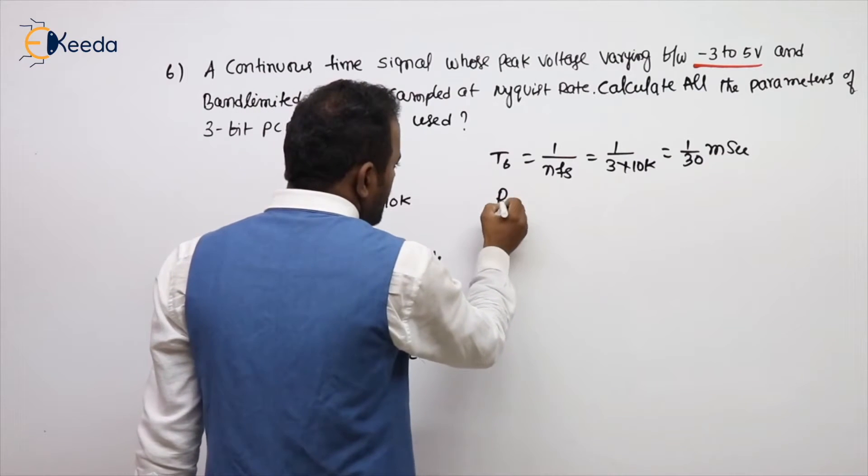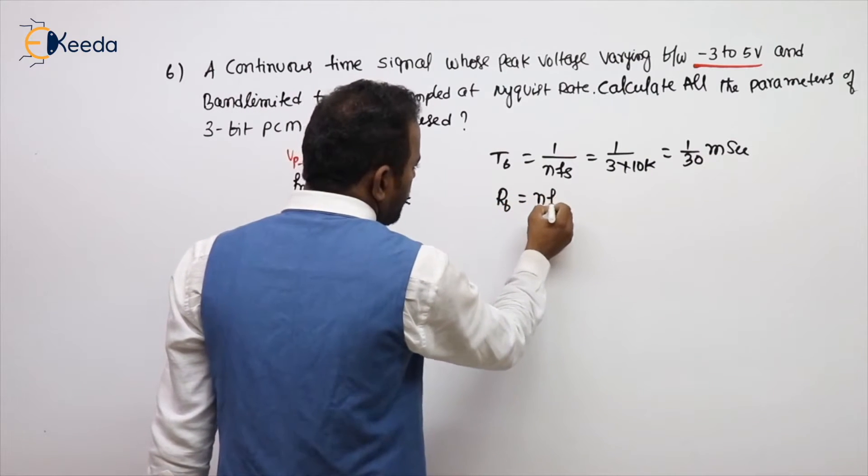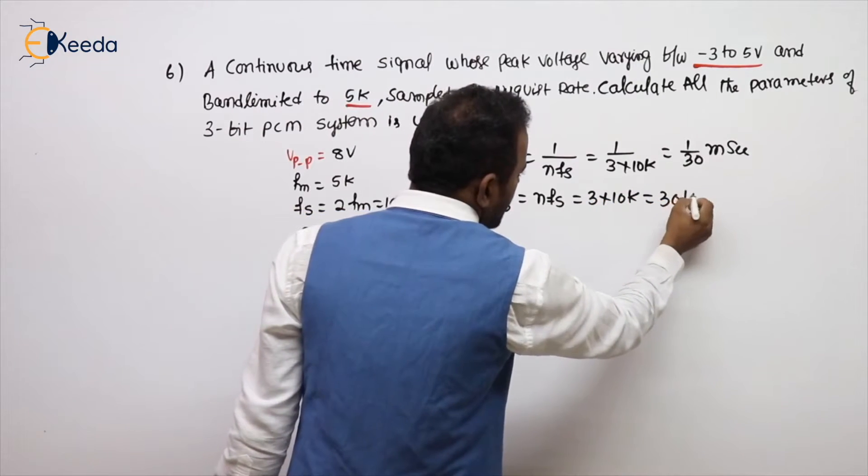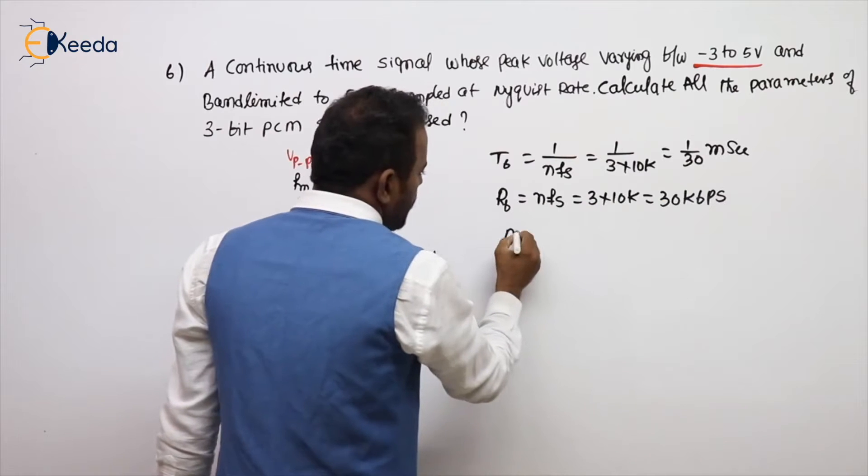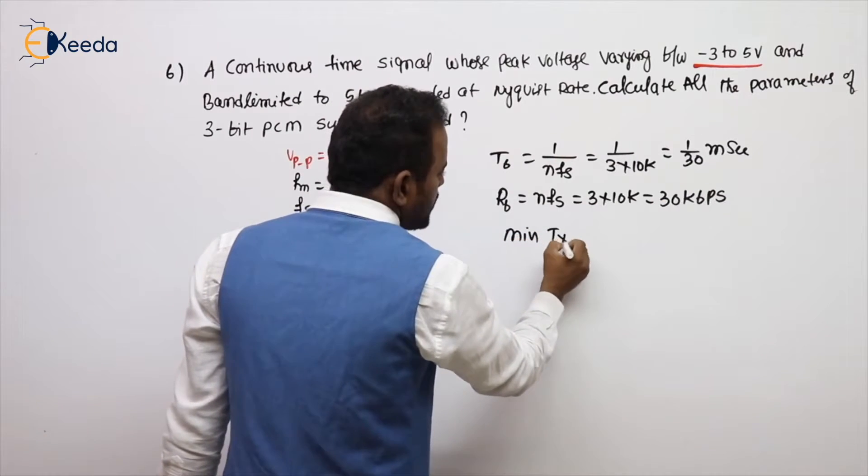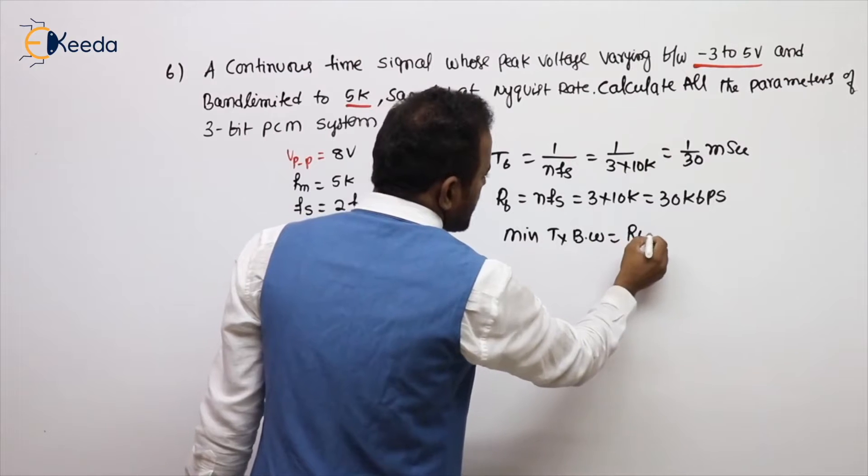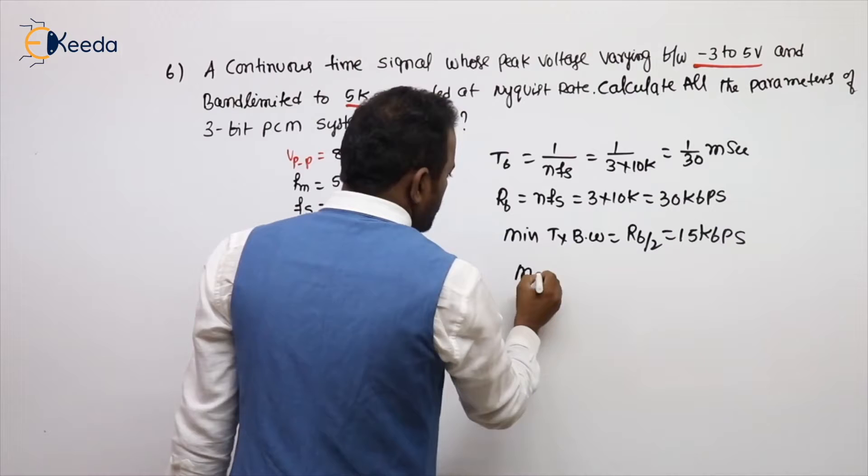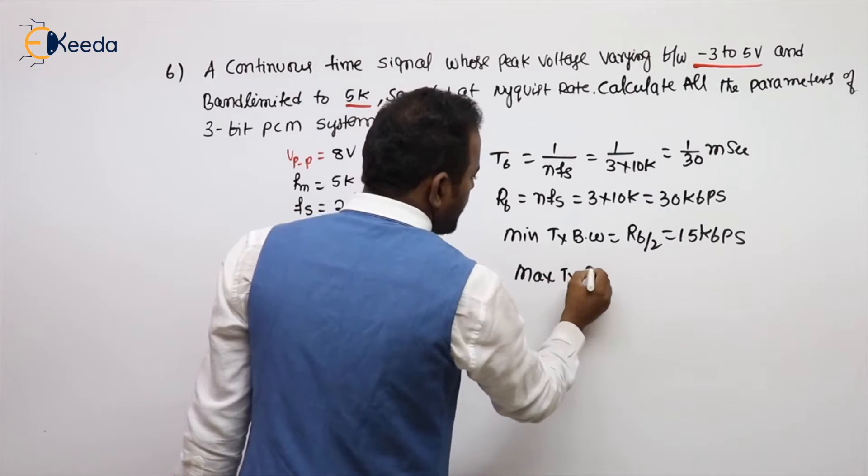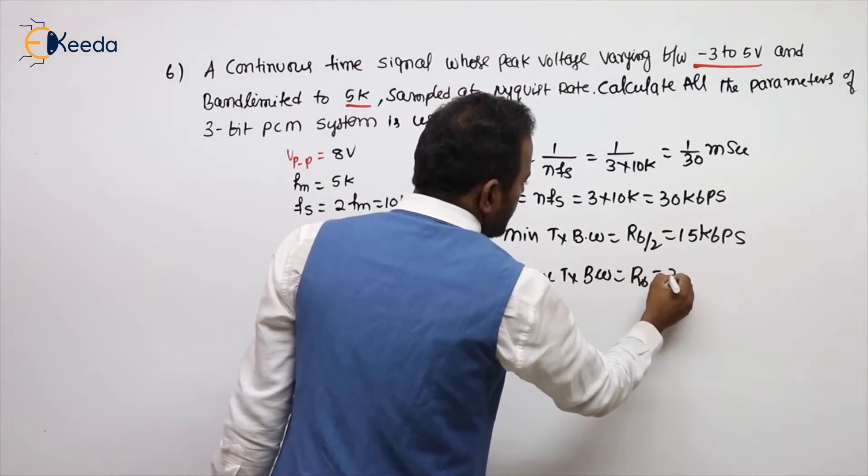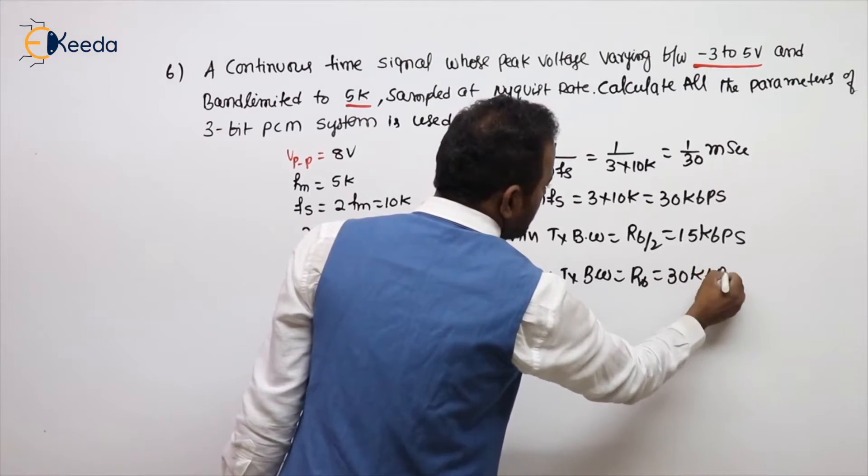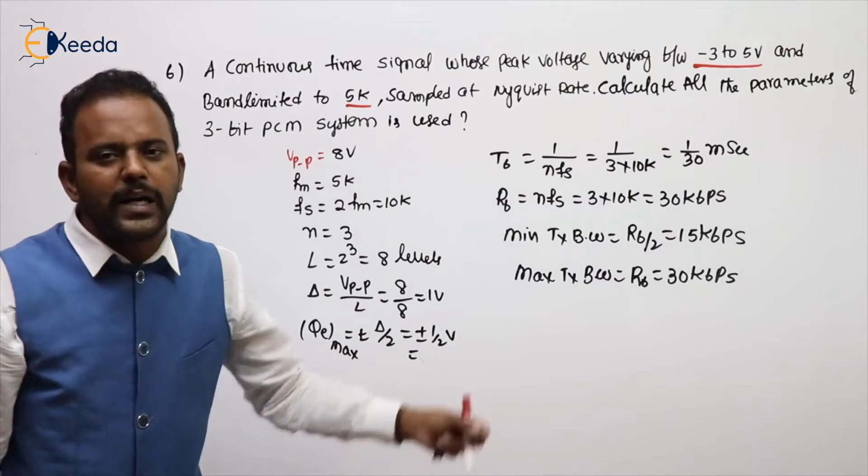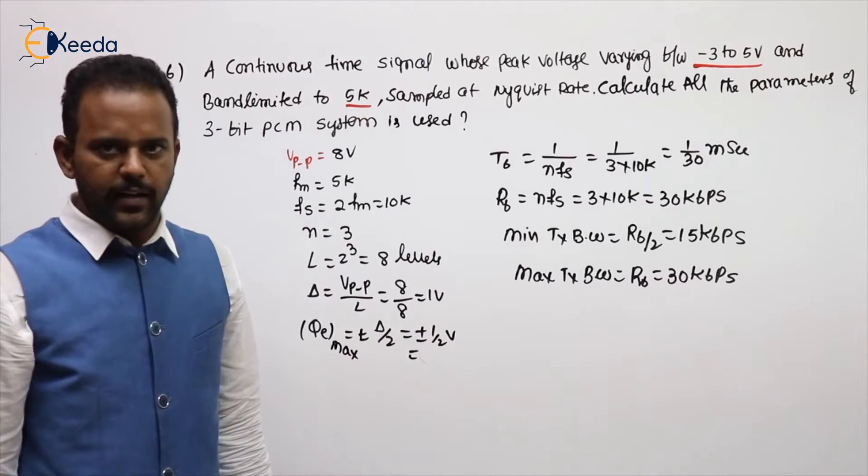What is RB sir? RB equal to NFS. N value is 3, FS is 10K, so 30 Kbps. Then what is minimum transmission bandwidth or transmission bandwidth is nothing but RB by 2, so 15 Kbps. What about the max transmission bandwidth? Maximum you can go up to RB which is nothing but 30 Kbps. A simple problem just to recall all the formulas by taking a simple question.